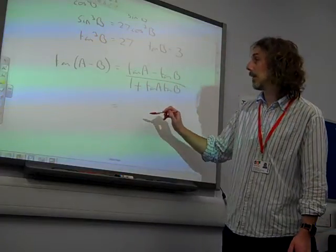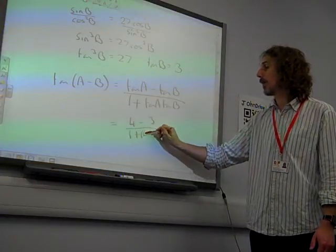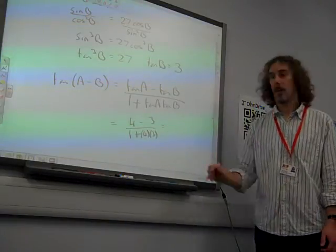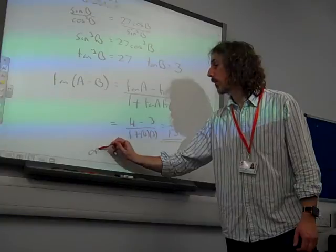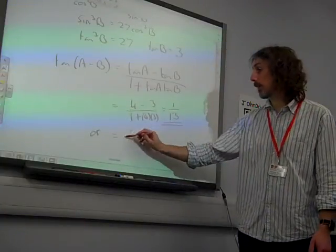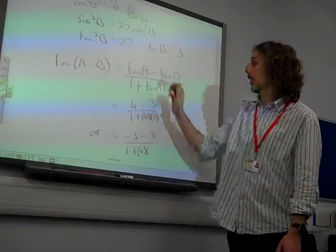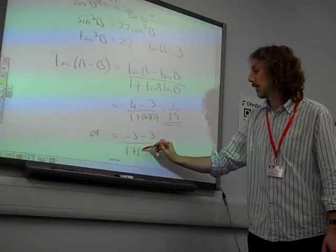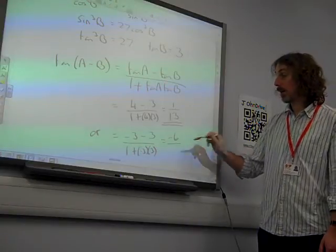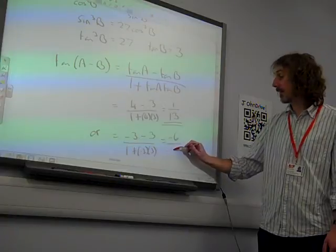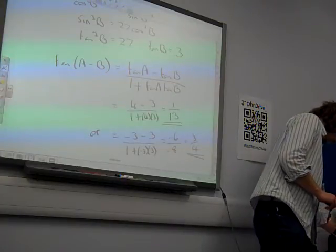So this could be either, let's take the first one, which was 4. So it's either 4 minus 3 over 1 plus 4 times 3, which is, I think, 1 over 13. There's one of our values. Or it equals minus 3 minus 3 over 1 plus minus 3 times 3. Like that. And that one gives me minus 6 over 1, take away 9 is minus 8. So my other value is 3 quarters. There are the two values.